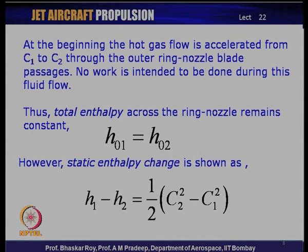Looking at the flow parameters: the flow starts with velocity C1, goes on to velocity C2 which is quite high in the ring nozzle stator. This creates the high velocity jet that impinges on the rotor. The total enthalpy change across this nozzle is constant — no work is being done — so the total enthalpy remains constant and the static enthalpy change is shown in terms of the change in velocity from C1 to C2. This is a large change, hence there is a large change in static enthalpy.